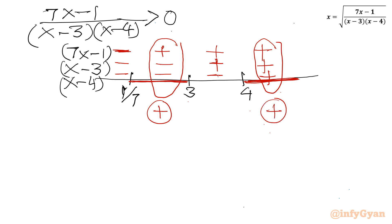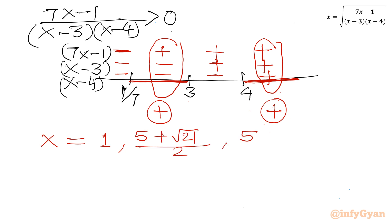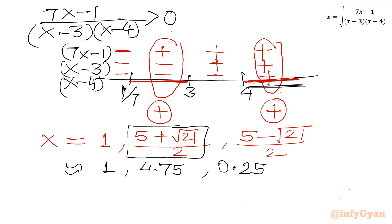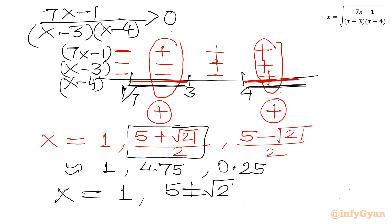Now we cross-examine our solutions. x equals 1 lies in the interval (1/7, 3) — accepted. x equals (5 plus root 21) over 2 is approximately 4.75, which lies in (4, infinity) — accepted. x equals (5 minus root 21) over 2 is approximately 0.25, which lies in (1/7, 3) — accepted. So we accept all three solutions: x equals 1 and x equals (5 plus or minus root 21) over 2.